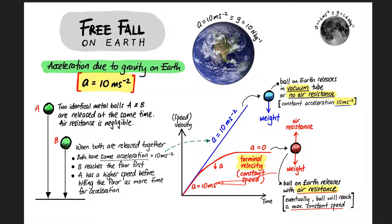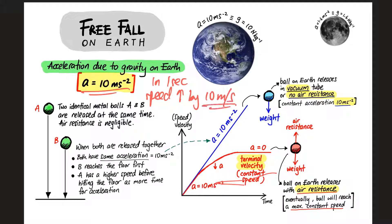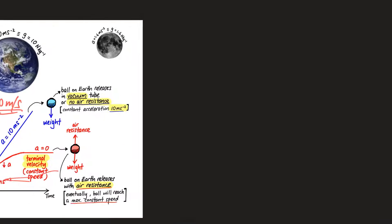In this video we're going to learn about free fall on earth — in other words, acceleration due to gravity. The value will be a constant 10 meters per second squared. That means if you drop an object from your hand right now, the moment you release it, the ball will go faster and faster. The acceleration will be a constant 10 m/s², meaning in one second the speed of the object will increase by 10 meters per second.